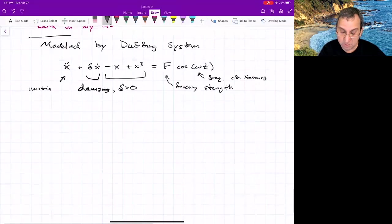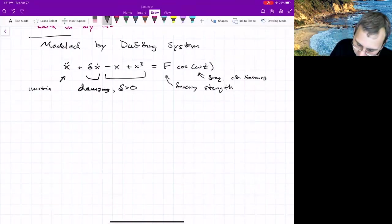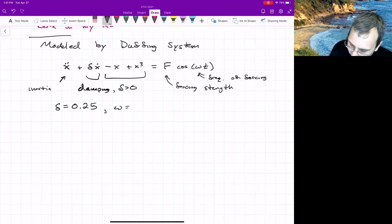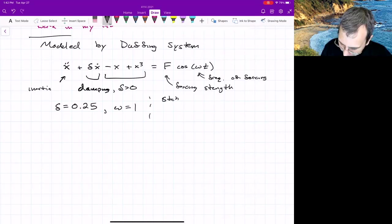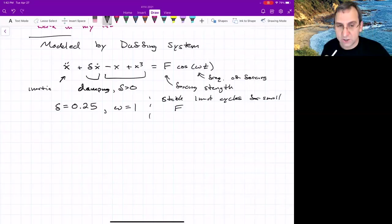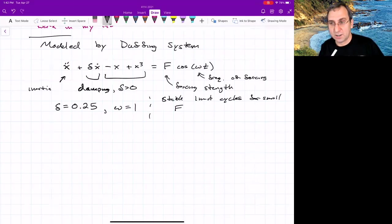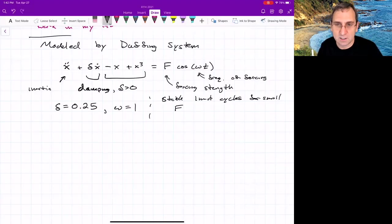We can look at some simulations of this. If we set delta equals 0.25, and just to simplify things, omega equals 1, and then vary the forcing strength, we can get different things. We would get stable limit cycles for a certain value of F. We get stable limit cycles for small F. The energy lost by dissipation is re-injected through the forcing, and you get this balance that leads to stable limit cycles.